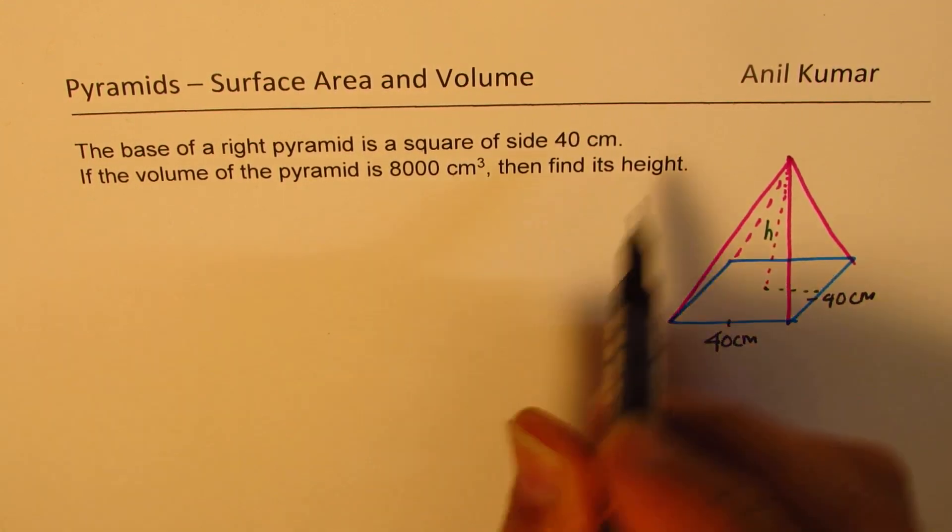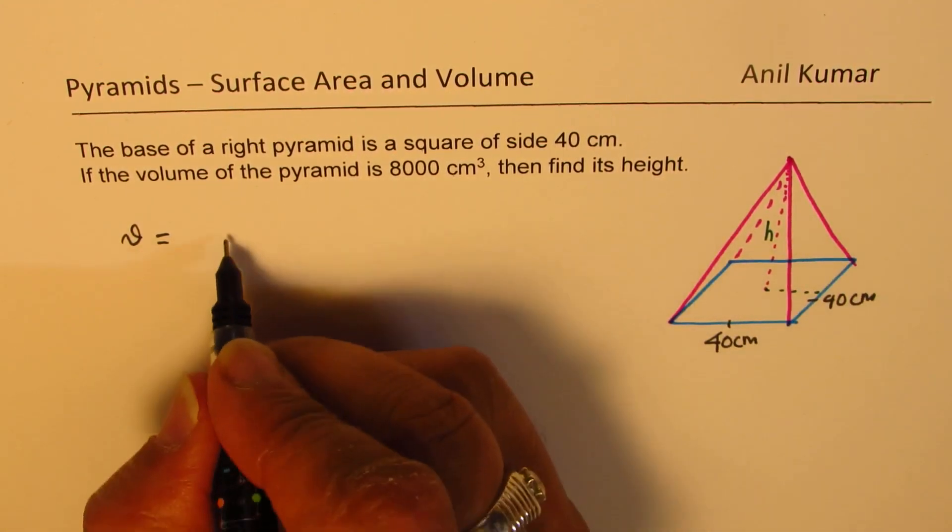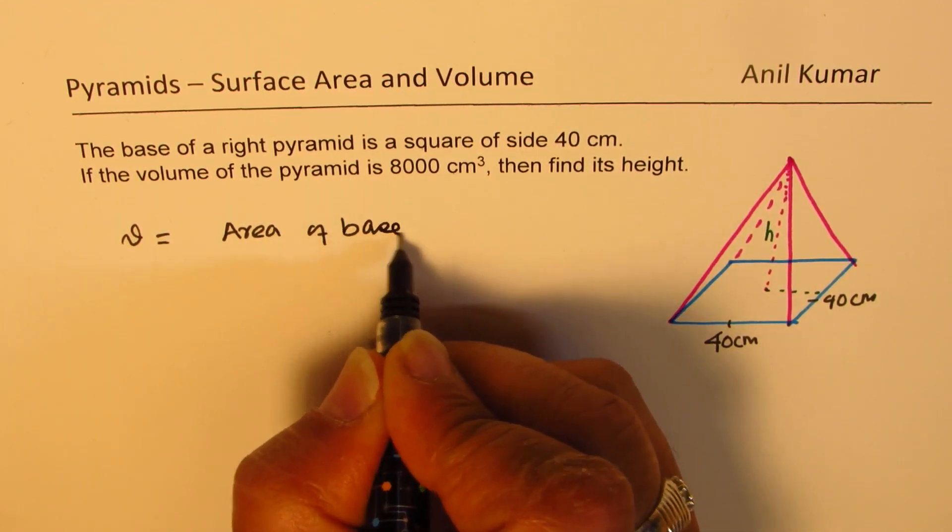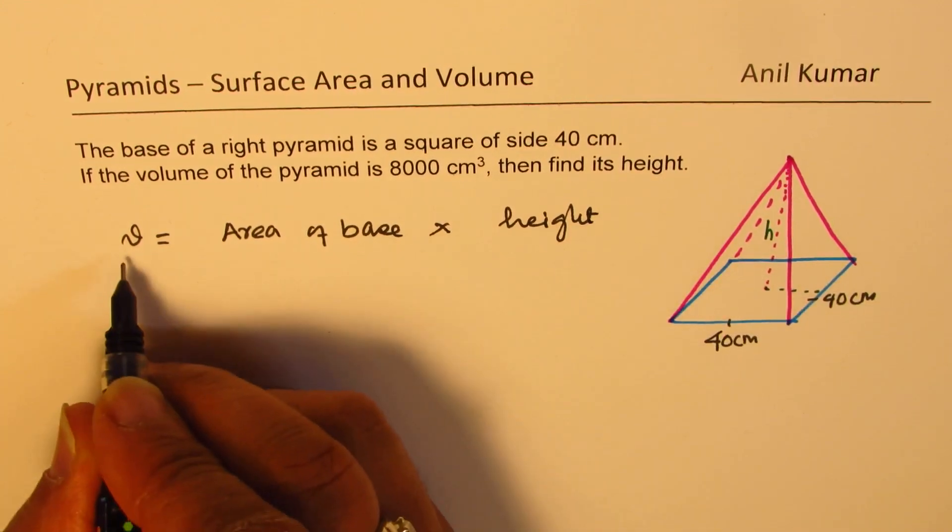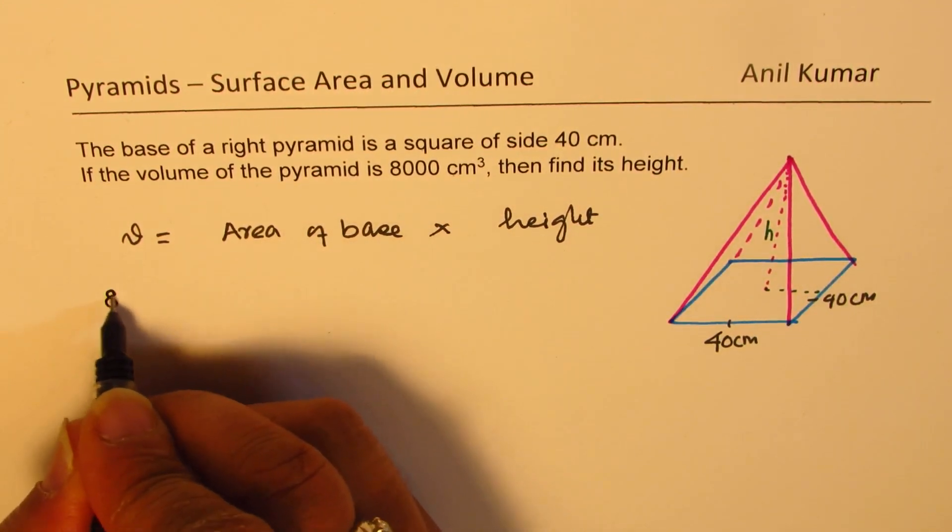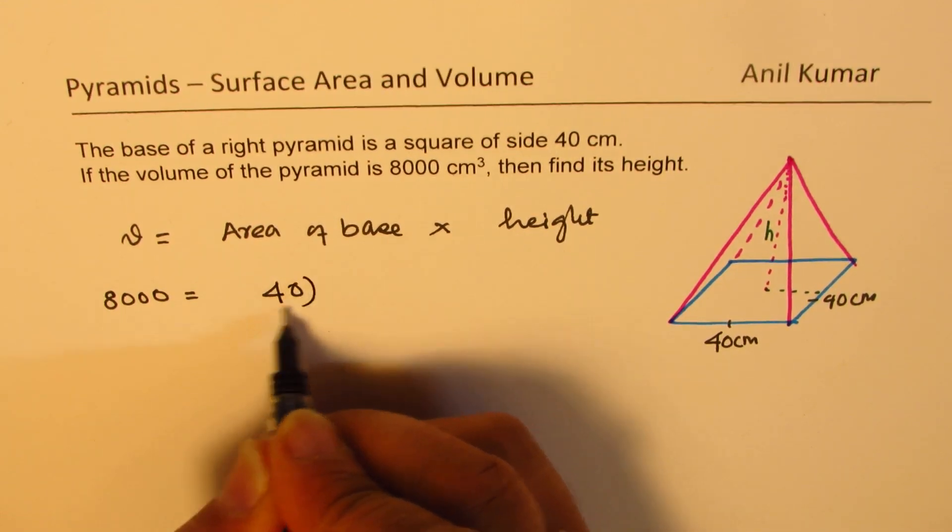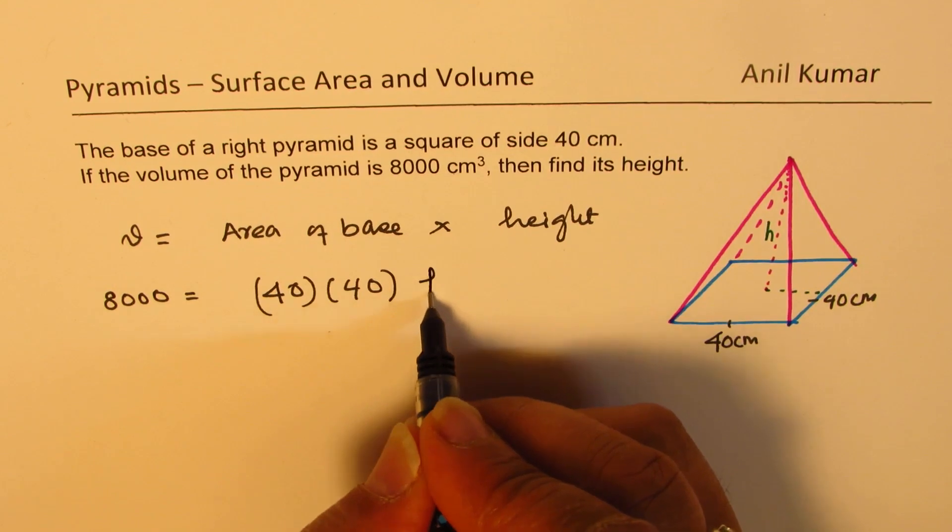The volume in this case will be area of base times height. Volume is given to us as 8,000. Area of base will be 40 times 40 times height, let's say h.